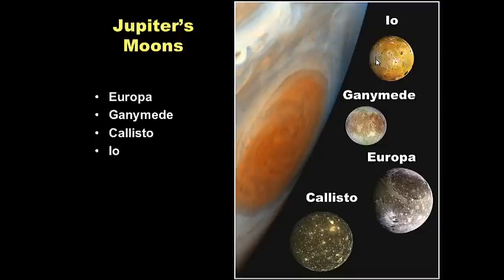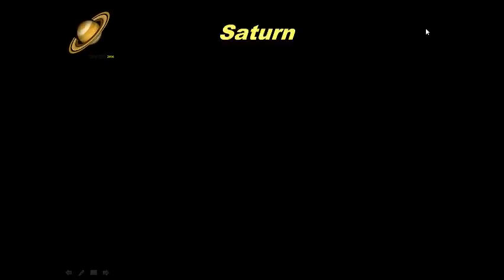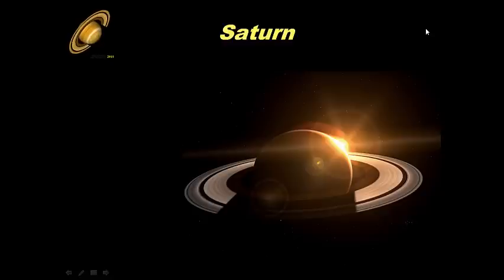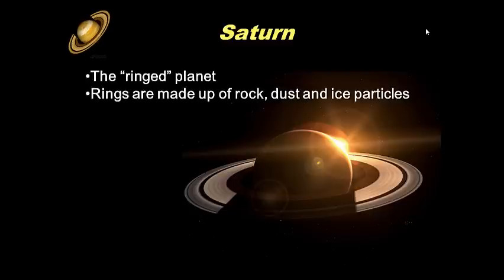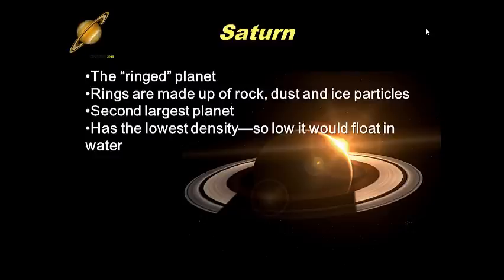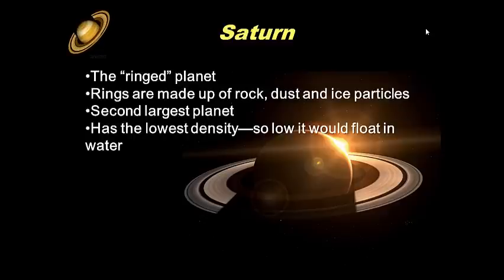All of these moons are very interesting to scientists because they're all unique — some have ice and volcanoes. Moving on to Saturn, the next planet out past Jupiter. It's the ringed planet most of us are familiar with. The rings are made up of rock, dust, and ice particles. It's the second largest planet after Jupiter, and it has the lowest density — so low it would actually float in water, since its density is less than one.